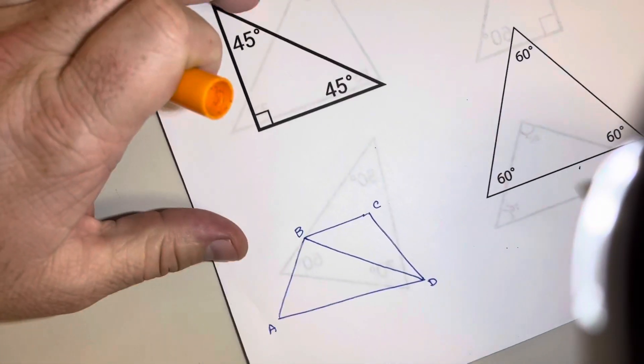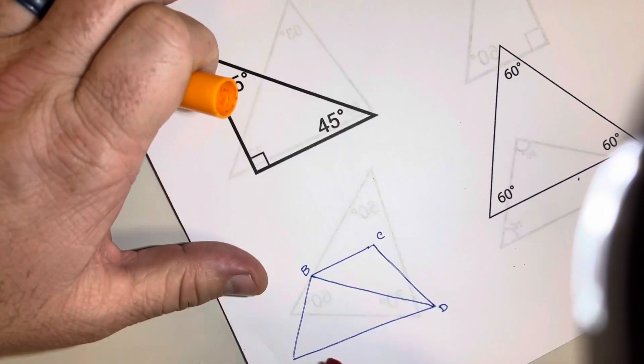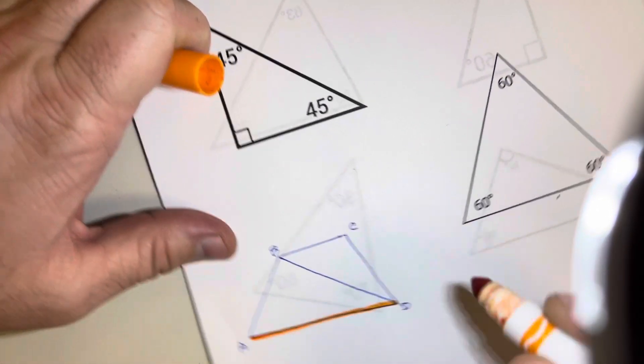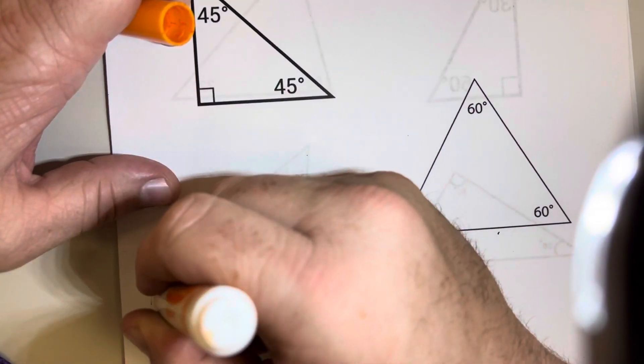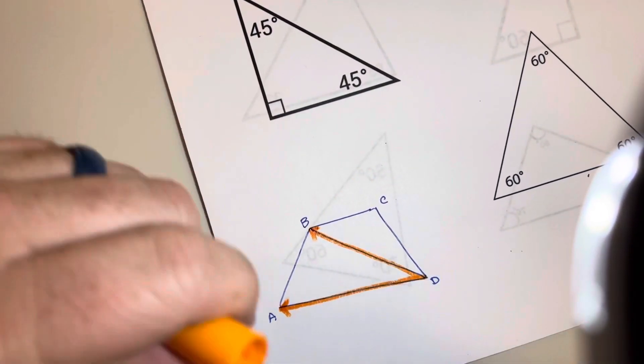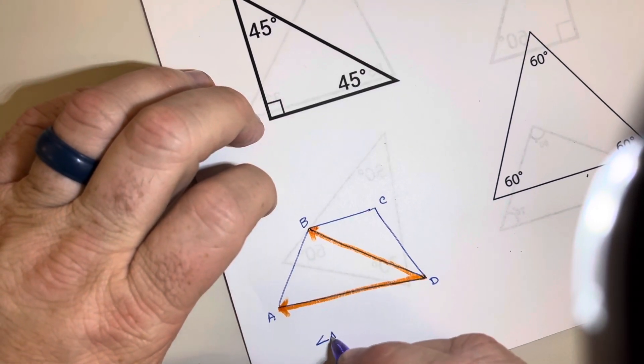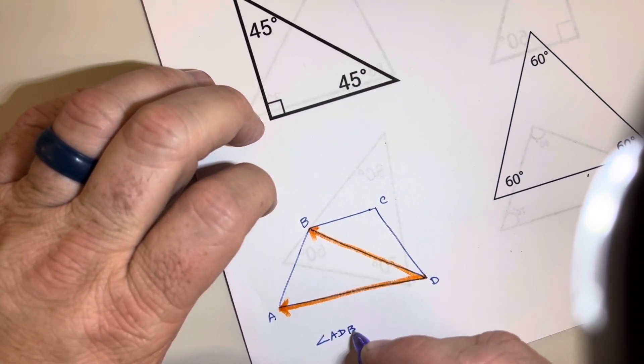So I'll use some colors here to try to help me. If we want to talk about angle ADB, okay? So from A to D to B, that's that angle right there. So you could call that angle ADB, because D is in the middle. So angle A, D, and B.